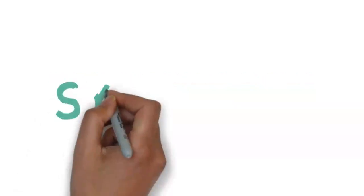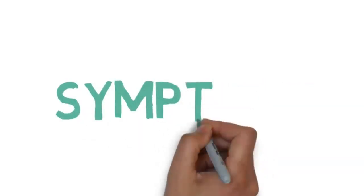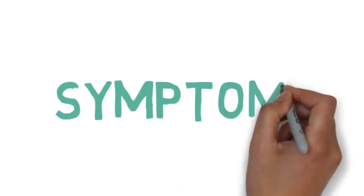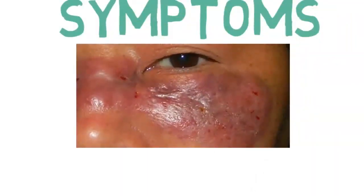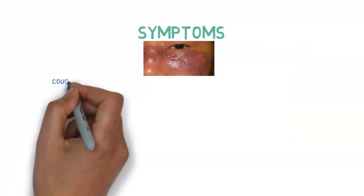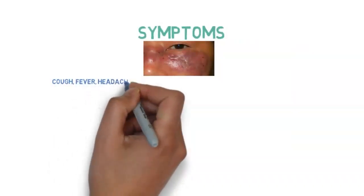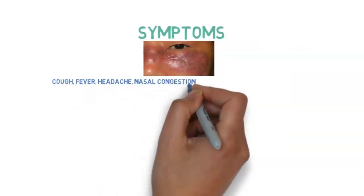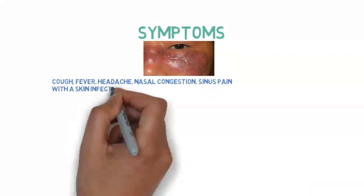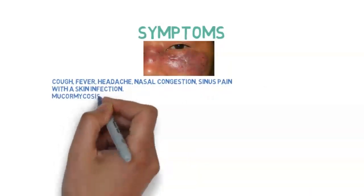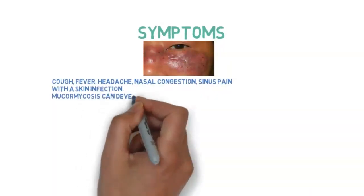Mucormycosis presents itself as either a respiratory or a skin infection. Signs of a related sinus or respiratory infection may include cough, fever, headache, nasal congestion, and sinus pain.